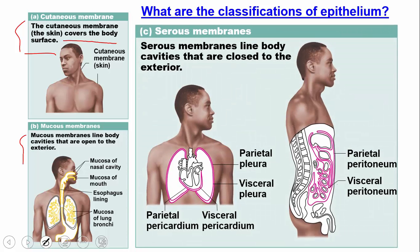The next type is the serous membrane. Serous membranes line body cavities that are closed to the exterior and help provide protection. For example, in the lungs: the parietal surface is always the outer membrane, the visceral membrane is always the inner one, and the cavity is between the two.